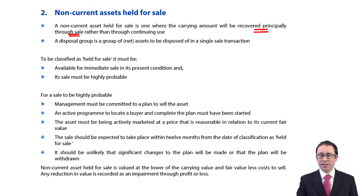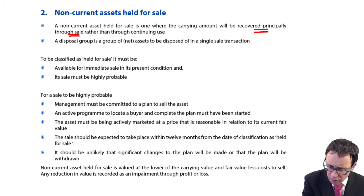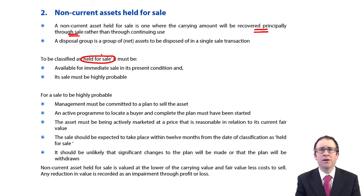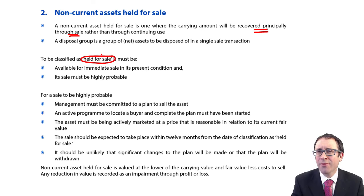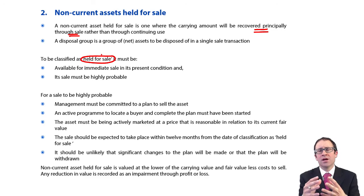What we're going to focus on is an individual asset. There are lots of criteria, and some of these could be tested within a multiple choice style question — for example, which of the following are or are not criteria with regards to classifying a non-current asset held for sale. The idea behind the criteria is that you can't just play around with it and pretend that you are selling it, trying to manipulate the accounts.